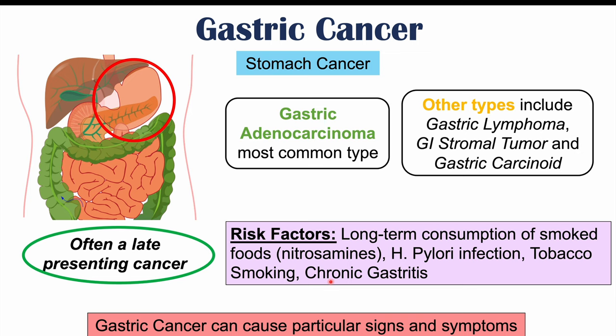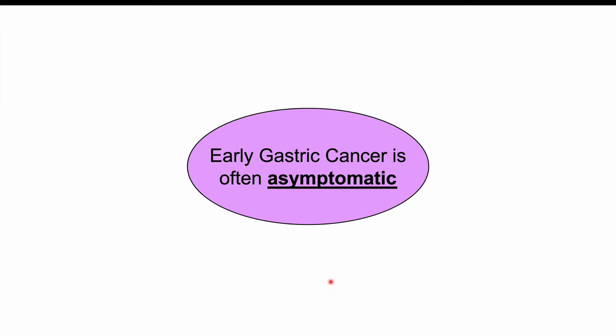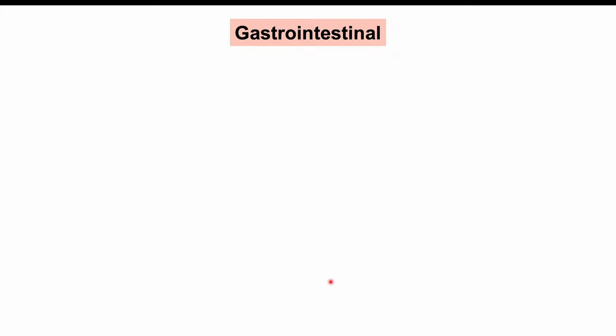Risk factors for gastric cancer include long-term consumption of smoked foods containing nitrosamines, H. pylori or Helicobacter pylori infection, tobacco smoking, and chronic gastritis or chronic inflammation of the stomach. It's important to note that early gastric cancer is often asymptomatic. Patients may have early stages of gastric cancer and not even know it, but when they do start to have symptoms, these are some of the most common.